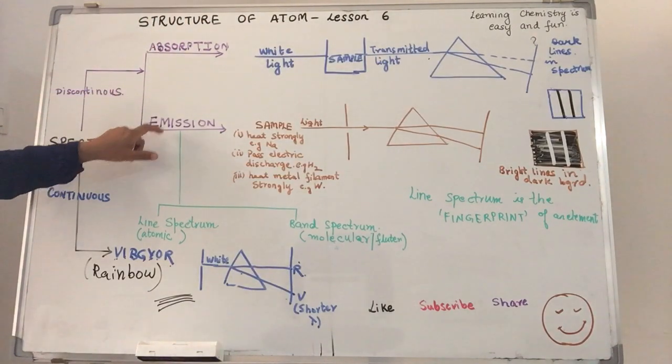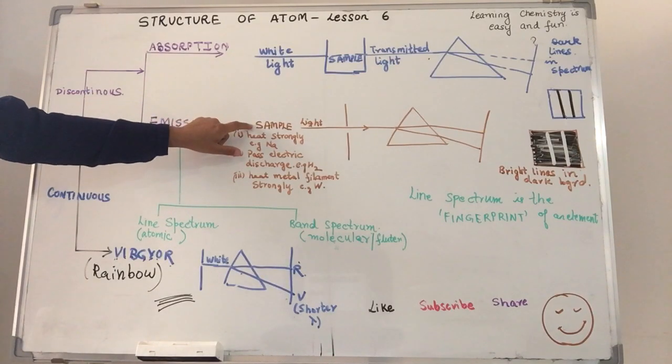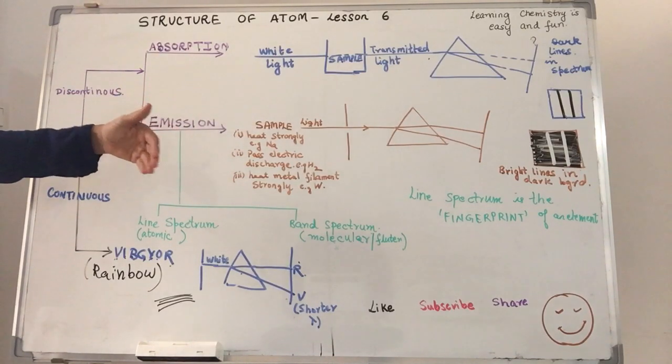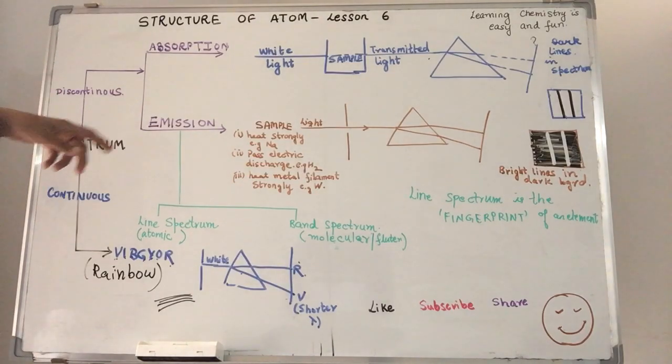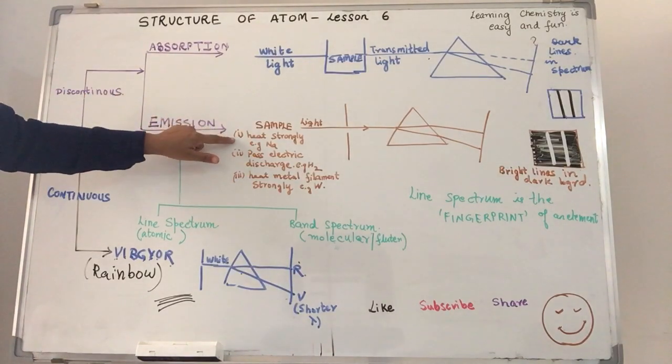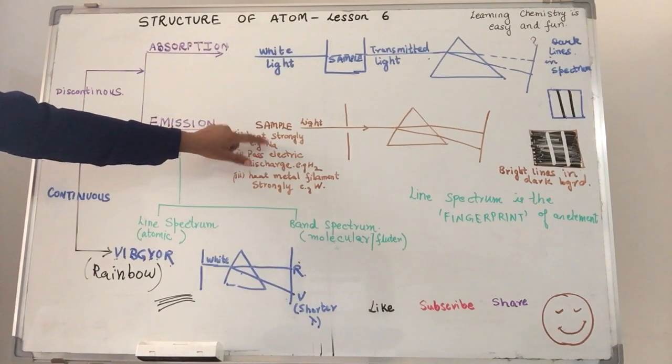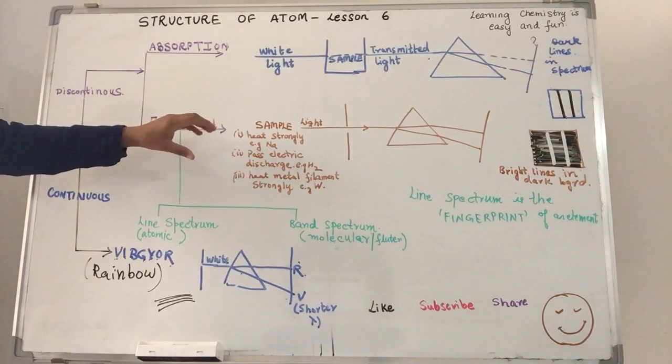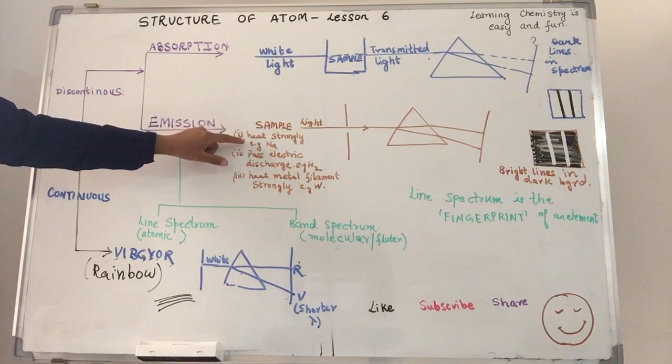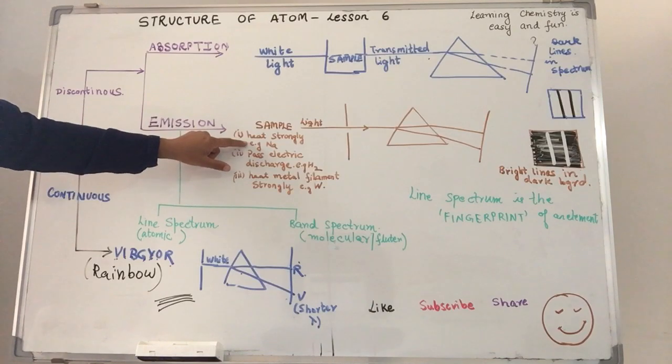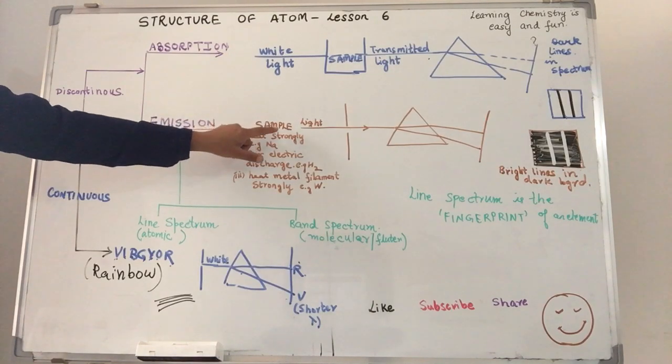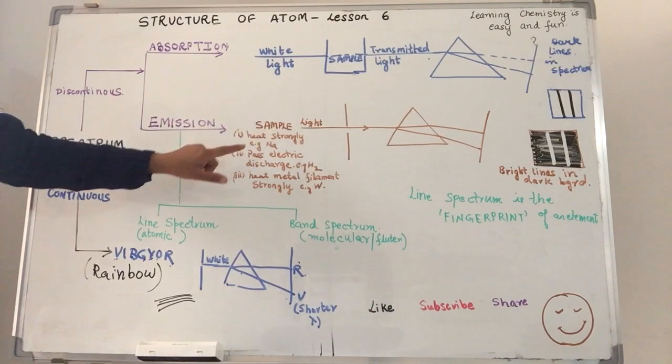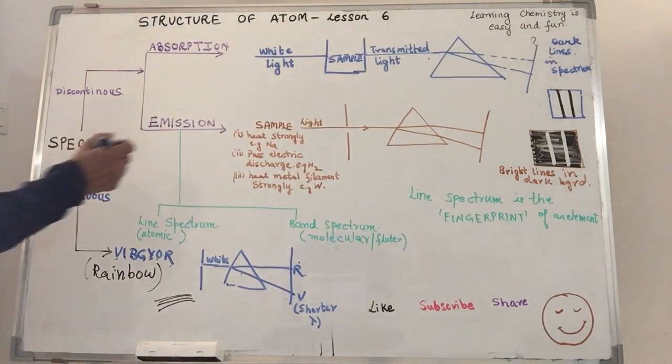Emission spectrum. You have got the sample. We excite the sample. We get it in an excited state. How? Either by heating it strongly. For example, you have sodium. Sodium metal. You take the sodium vapor and put it in a Bunsen burner. So what will happen is the sodium metal which will vaporize will be emitting certain light.